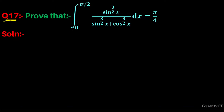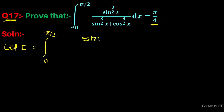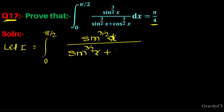Question number 17: prove that the integral from 0 to π/2 of sin^(3/2)(x) / (sin^(3/2)(x) + cos^(3/2)(x)) dx equals π/4. First of all, let I equal to the integration from 0 to π/2 of sin^(3/2)(x) / (sin^(3/2)(x) + cos^(3/2)(x)) dx. Suppose this is equation one.